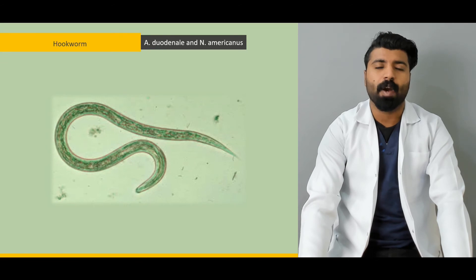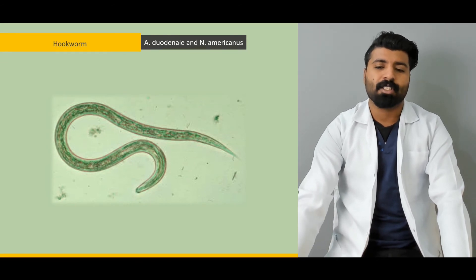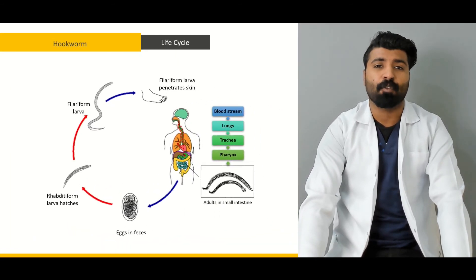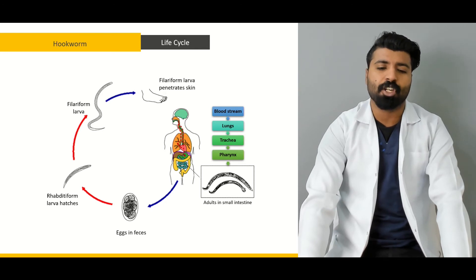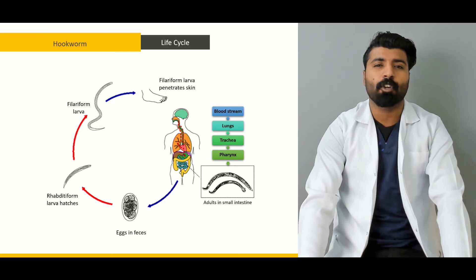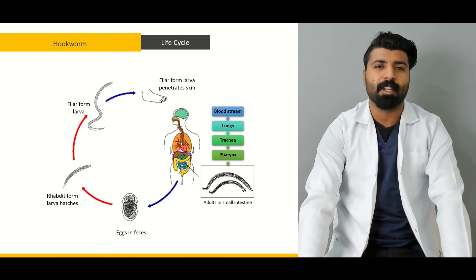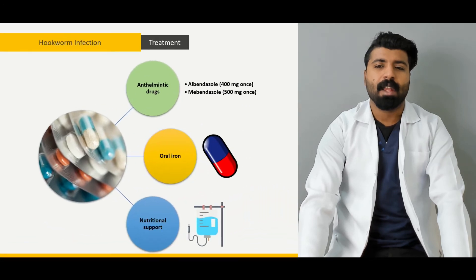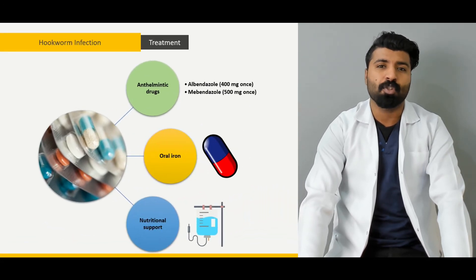Next, we're going to talk about hookworm — why it's called hookworm and why its shape is like a hook. We'll cover its life cycle: how it penetrates our skin, how it hatches into filariform larvae, and from there how it travels into the bloodstream, into the lungs, into the trachea, into the pharynx, and into the stomach. We'll discuss the life cycle in detail, and then how we reach the diagnosis of hookworm infection.